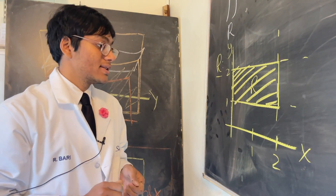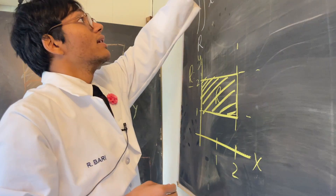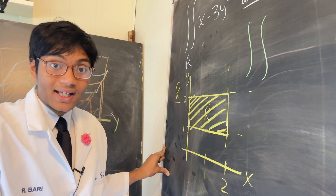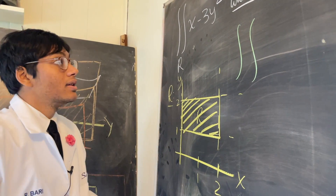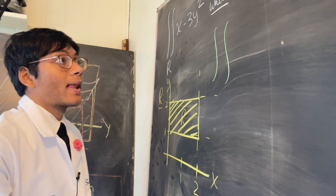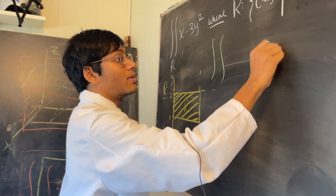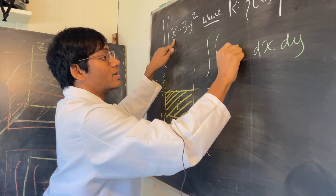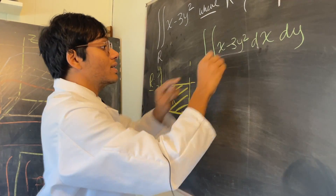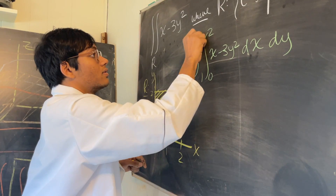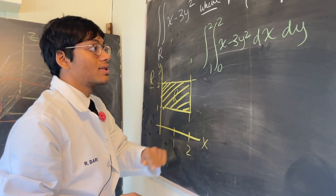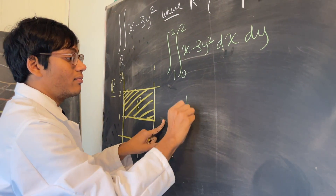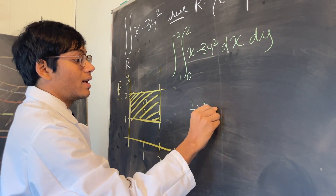Now let's integrate. You can integrate with respect to x first and then y, or y first and then x — it doesn't matter. Let's do dx dy. Our function is x minus 3y squared; the limits for x are 0 to 2, and for y are 1 to 2. Integrating with respect to x first: by the inverse power rule, x becomes x squared over 2, and 3y squared times x gives 3y squared times x.